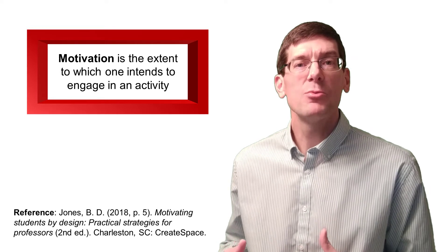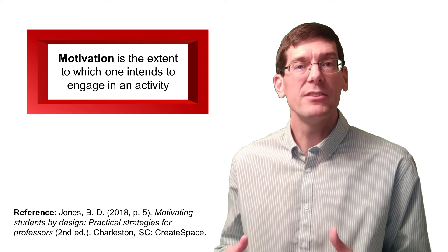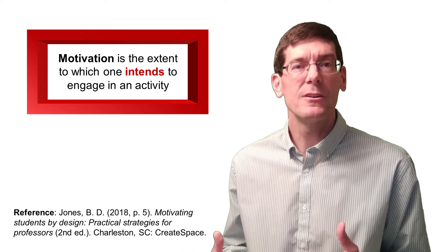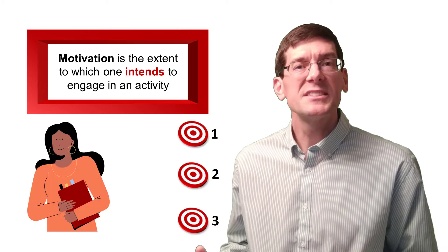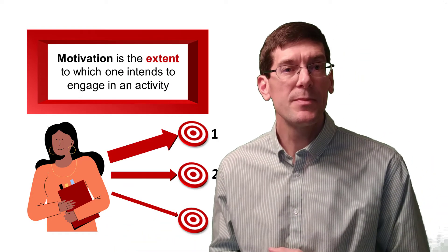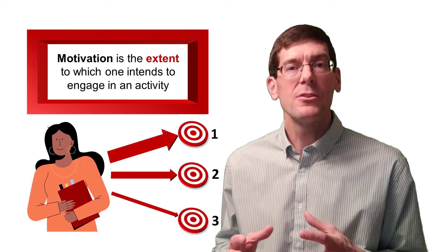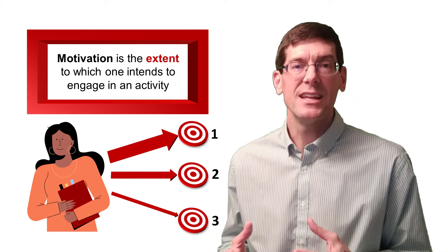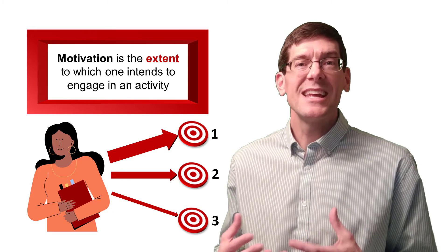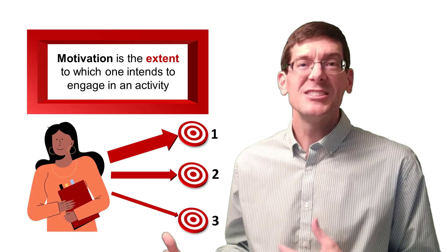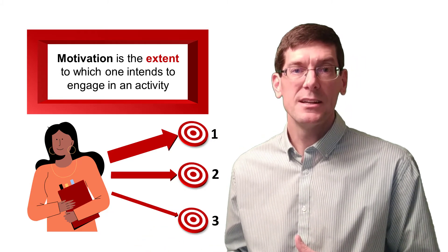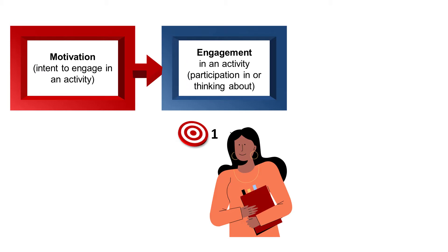Motivation is the extent to which one intends to engage in an activity. Notice that the person hasn't done anything yet, but they intend to for whatever reason. For example, this girl may intend to do these three things but she hasn't done them yet. The word 'extent' refers to the magnitude of the intent, which is represented by the thickness of the arrows. You can see that she really intends to do the first activity, she has less intent to do the second, and even less intent to do the third.